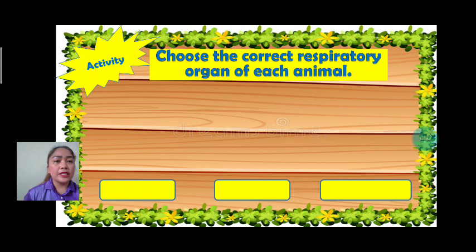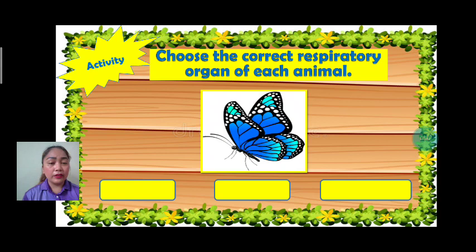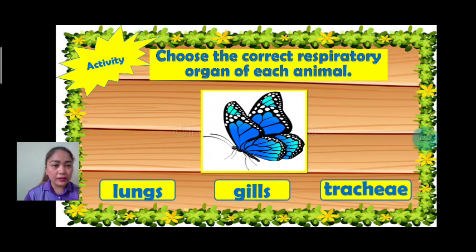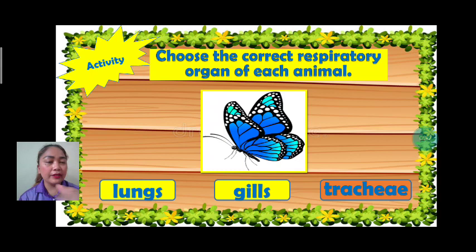Let's have an activity. Choose the correct respiratory organ of each animal. Our vocabulary is butterfly. How does a butterfly breathe? Is it lungs, gills, or trachea? Which one? Lungs, gills, or trachea? The answer is trachea. Very good.